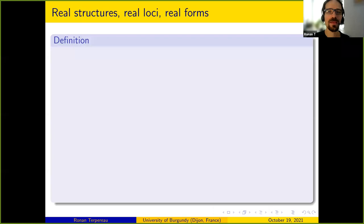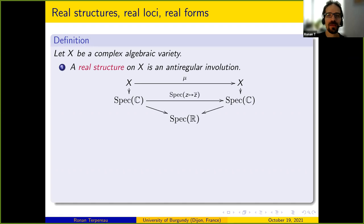First let me recall the classical setting concerning the notions of real structures, real loci, and real forms. Starting with X, a complex algebraic variety, a real structure on X is an anti-regular involution — which means a scheme involution such that the following diagram commutes.